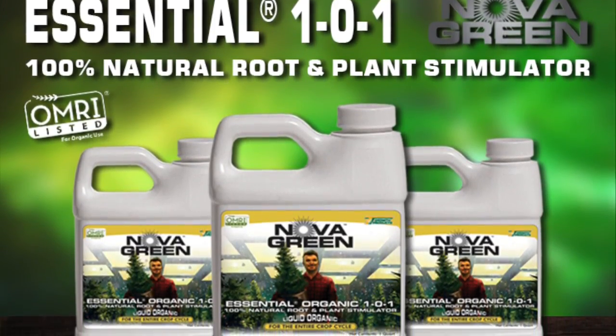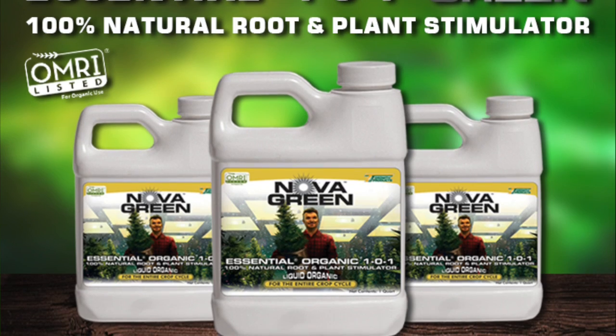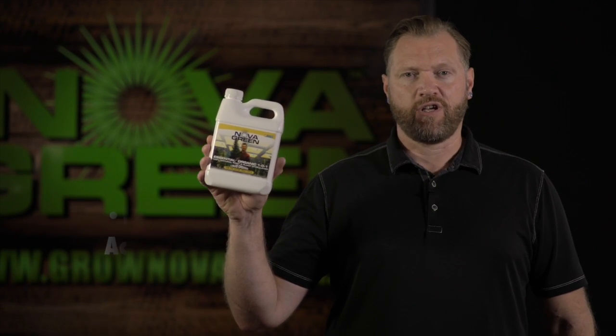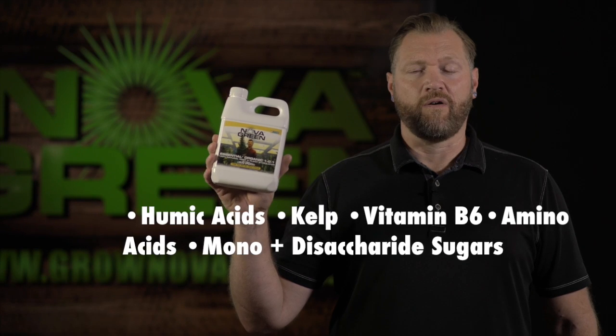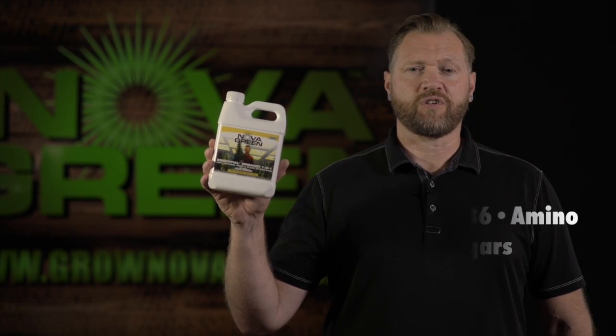In this section, we'll be speaking about our essential organic product. Everything your plant needs: humic, kelp, vitamin B6, aminos, and two forms of sugars.